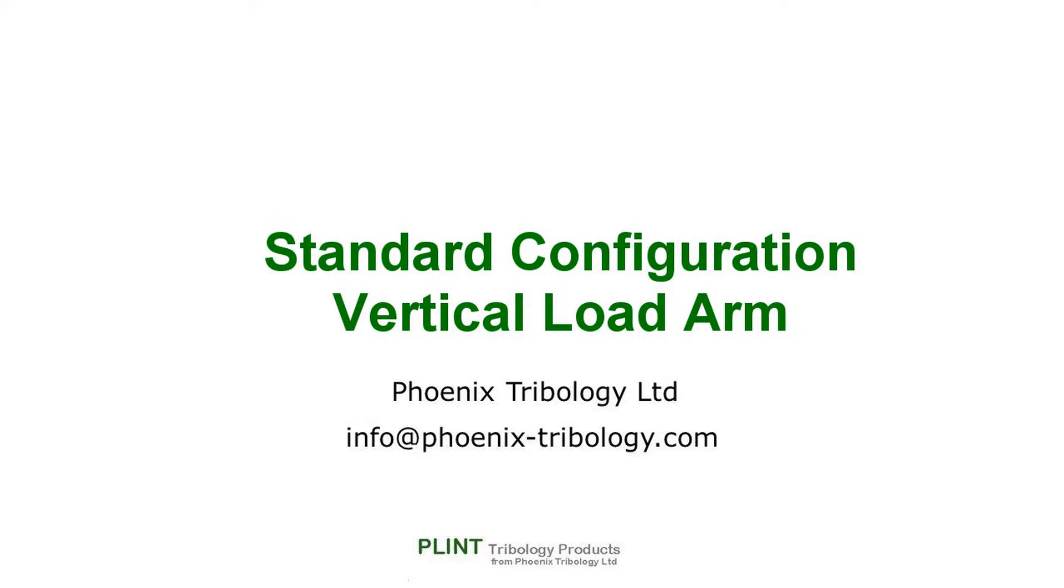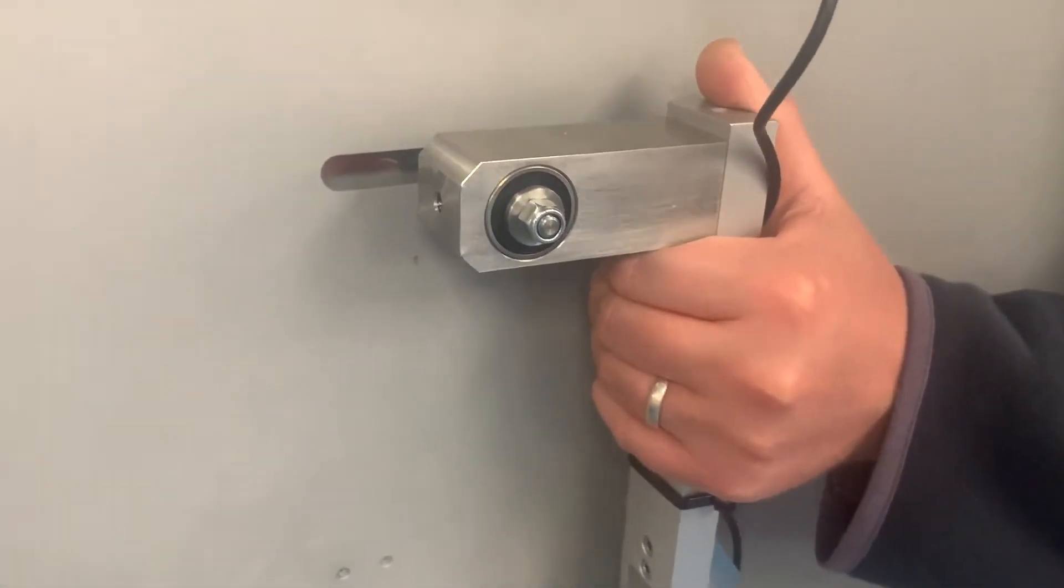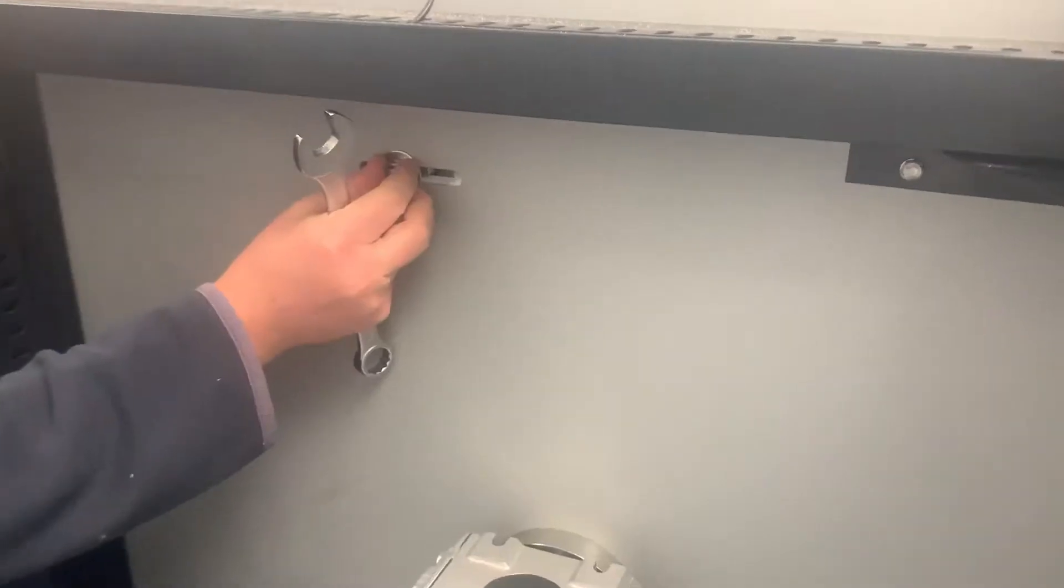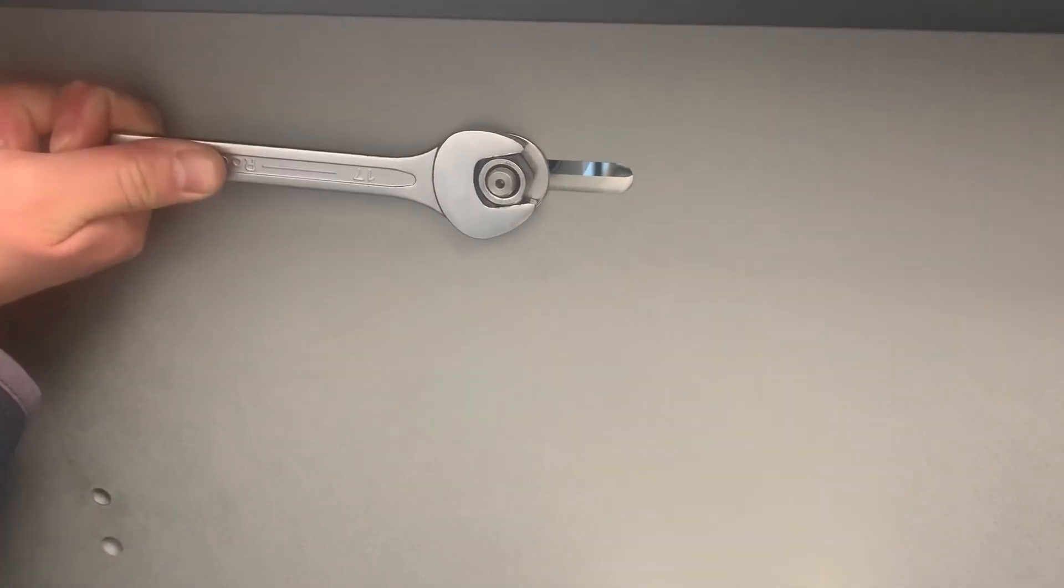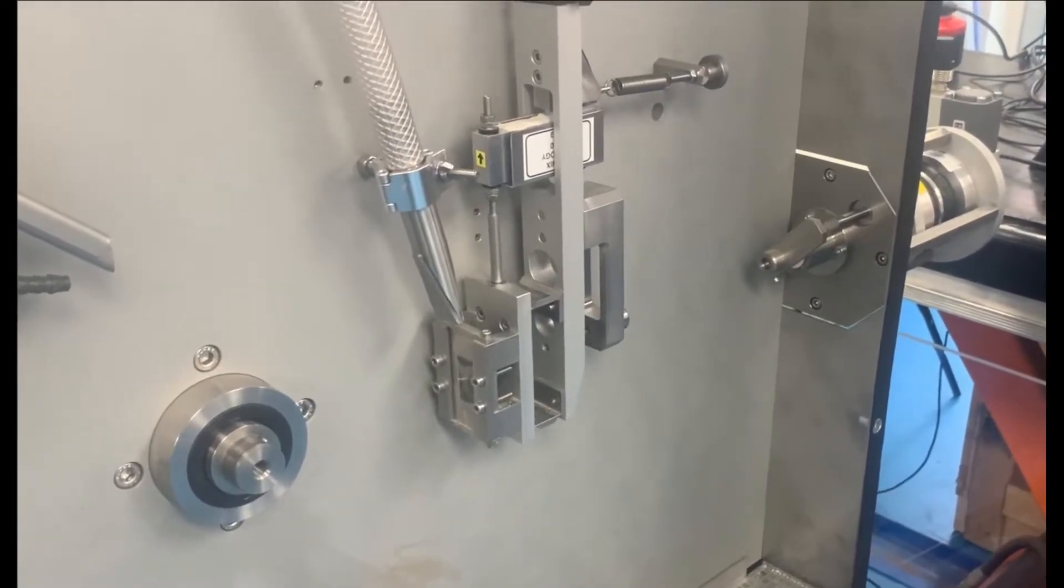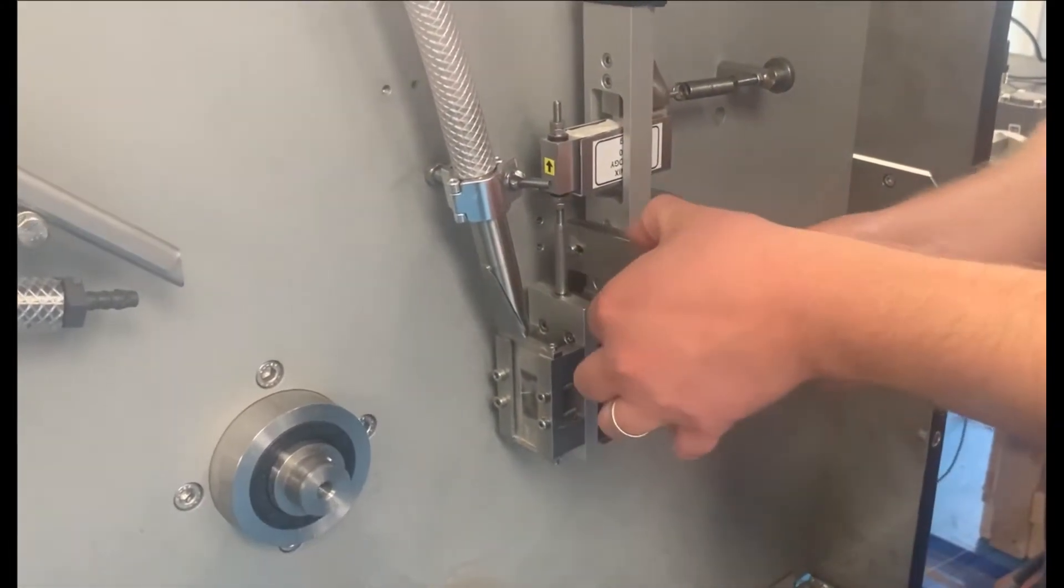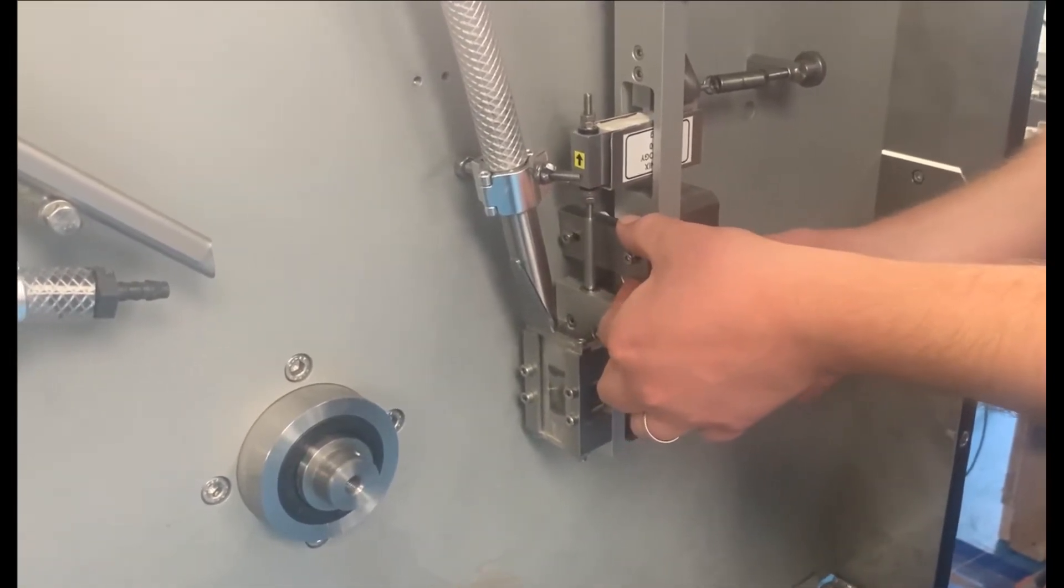Standard abrasion tests are performed with the specimen load arm in the vertical position. To install the load arm in this position, insert the load arm pivot pin in the slotted hole on the back plate and secure with the nut provided. Now fit the load arm guide block. This keeps the load arm steadily aligned with the test wheel.